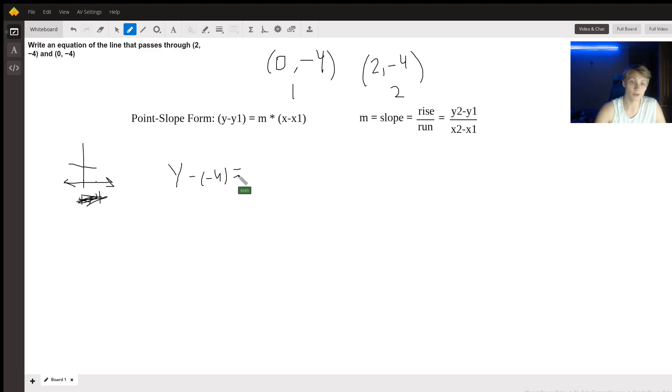y1, you fill in with your y1, in this case that's negative 4, equals m. We don't know m yet, but we'll figure that out in a second using the slope formula, times x minus x1, which in this case is 0.